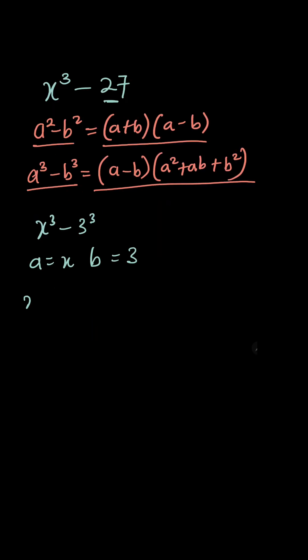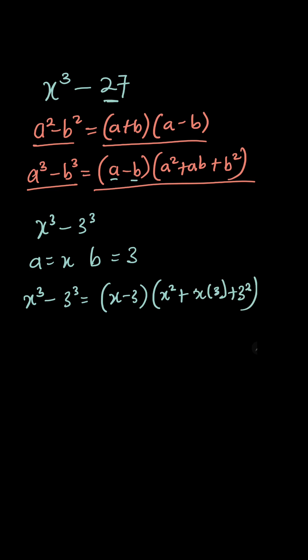So therefore when you have x cubed minus 3 cubed, we have a minus b. So it's going to be x minus 3, and then a squared, and a is x, so we're going to have x squared plus ab. So ab is x into 3, plus 3 squared.